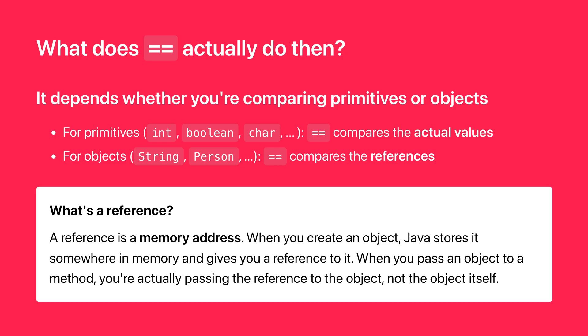What does double equals actually do then? It depends whether you're comparing primitives or objects. For primitives, double equals compares the actual values. For objects, double equals compares the references. A reference is a memory address. When you create an object, Java stores it somewhere in memory and gives you a reference to it. When you pass an object to a method, you're actually passing the reference to the object, not the object itself.